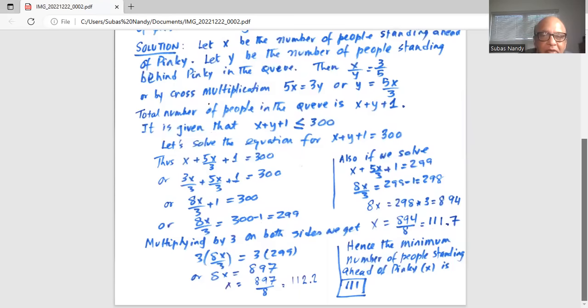Hence the minimum number of people, that is the minimum value of x in front of Pinky is 111. So the correct answer is 111.